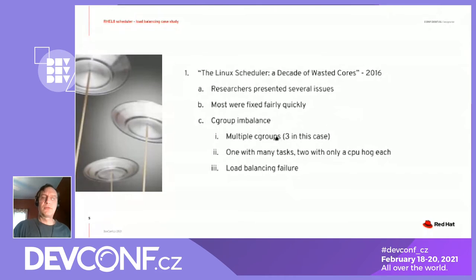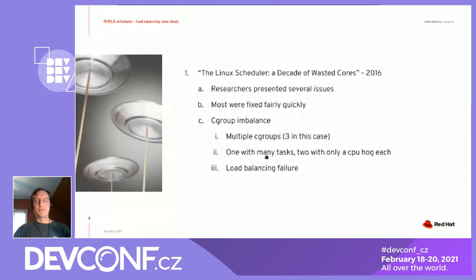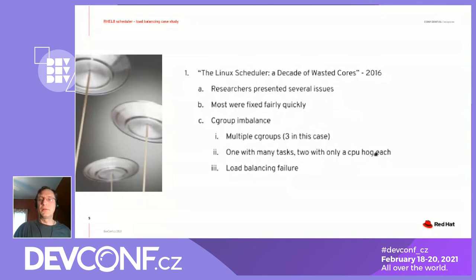The cgroup imbalance issue is this: if you have multiple cgroups on the system with more tasks in one and very few busy tasks in the others, you can cause the load balancer to work badly. For the case we're looking at, we use three cgroups specifically designed to trigger this. We run a multi-threaded benchmark in one cgroup, and then a CPU hog in each of the other two cgroups. We'll see that the load balancing does not do what we'd like it to do, and we'll illustrate that with some nice pictures.